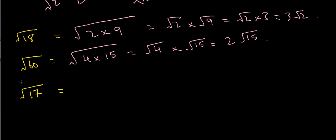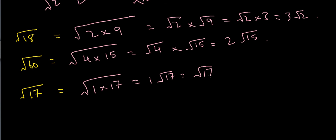The next problem asks us to simplify the square root of 17. I notice that the only numbers that divide 17 — the only factors of 17 — are 1 and itself, so by definition it's a prime number. Since 17 is prime, I can't simplify it any further. If you try something like the square root of 1 times 17, you just end up with 1 root 17, which is root 17. So root 17 is already in its simplest form — it's already a surd.